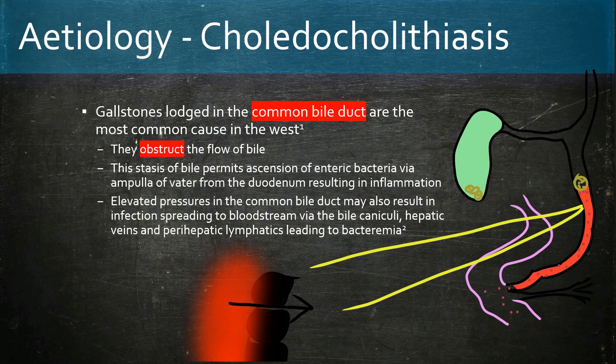Elevated pressures in the common bile duct may result in the infection spreading via the bile canaliculi, then hepatic veins, and then perihepatic lymphatics, leading to bacteremia.